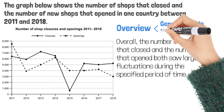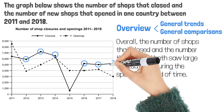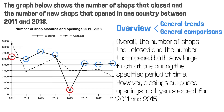Now let's finish the overview. Apart from the trends, are there any general comparisons we can make? If you look at the whole picture instead of single data points, you will find that closings outpaced openings in all years except for 2011 and 2015. You can use 'except for 2011 and 2015,' 'except in 2011 and 2015,' or 'except 2011 and 2015' — they are all correct. This is the entire overview paragraph.